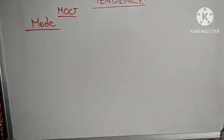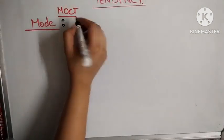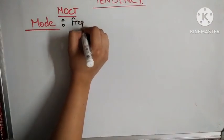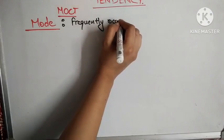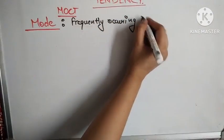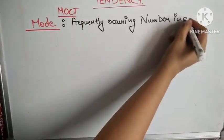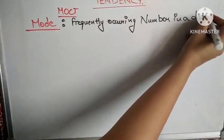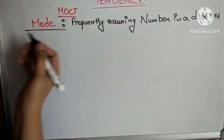In simple terms, mode is the frequently occurring number in a data set. That is the basic definition of mode — it is the most frequently occurring number in a given data set.